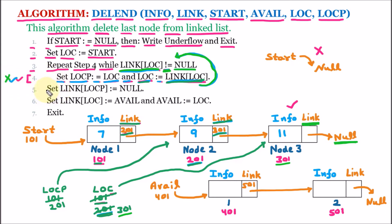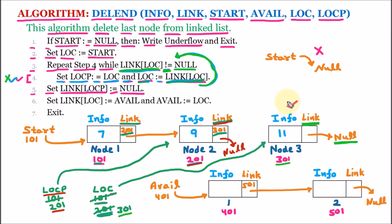In line 5, we set link of LOCP equal to null. LOCP holds address 201, which is node 2, so node 2's link part is set to null. The last node is now out of the list, meaning we have successfully deleted node 3 from the linked list.